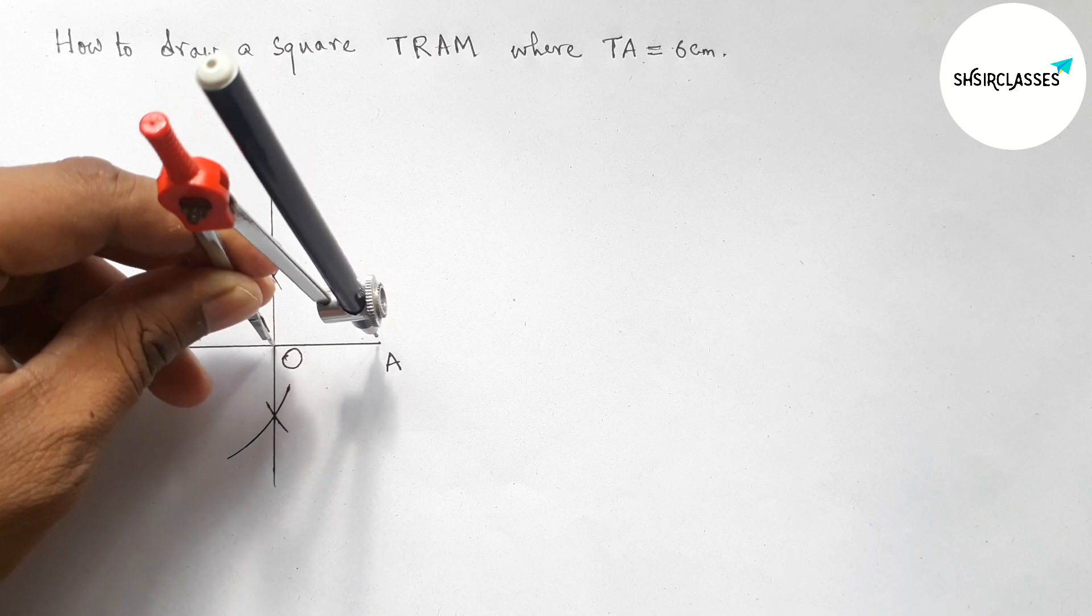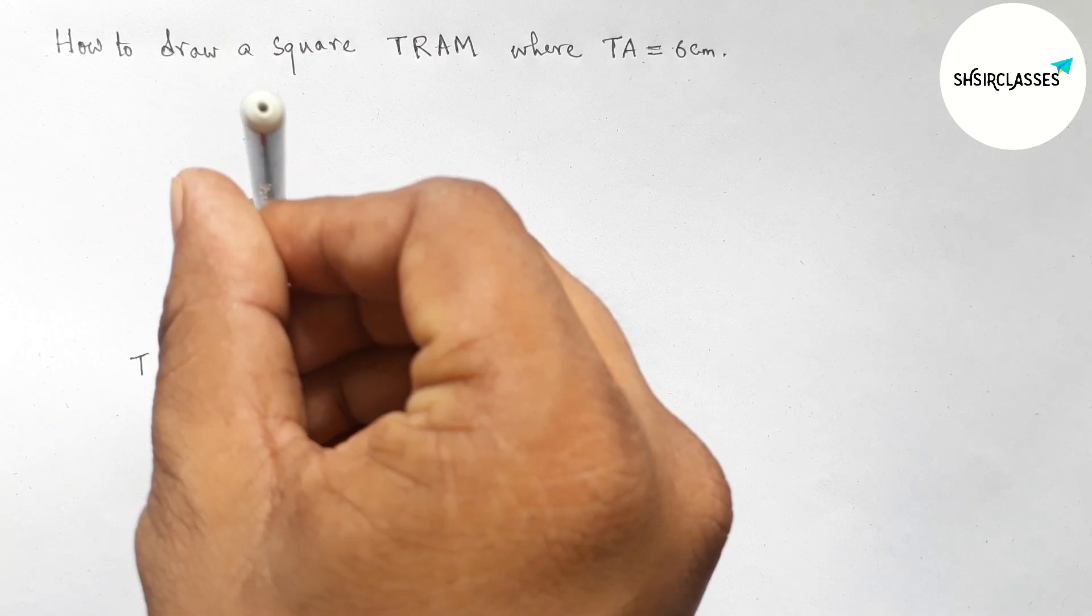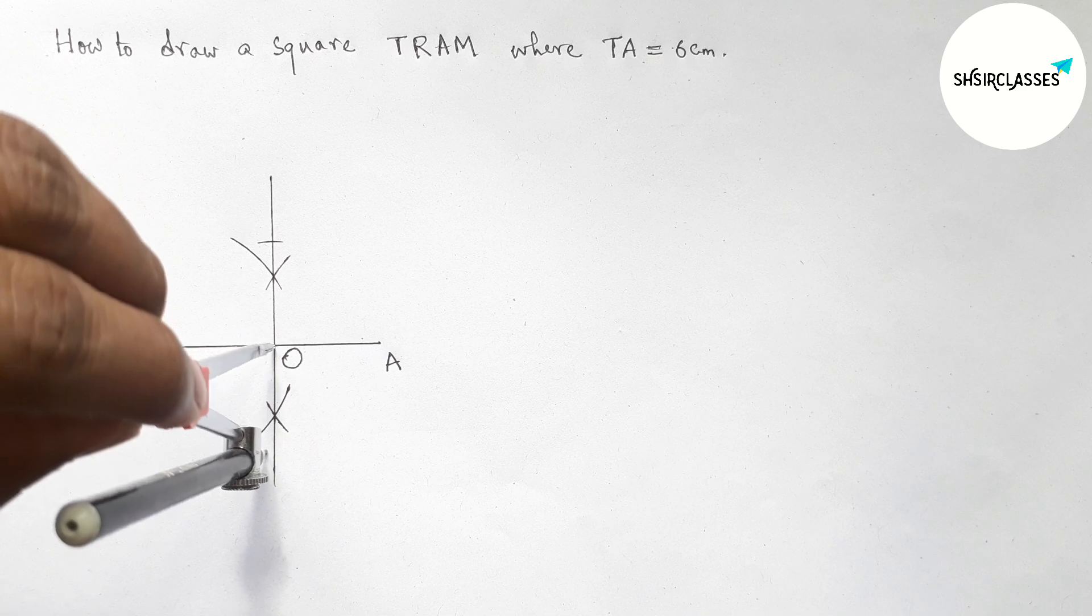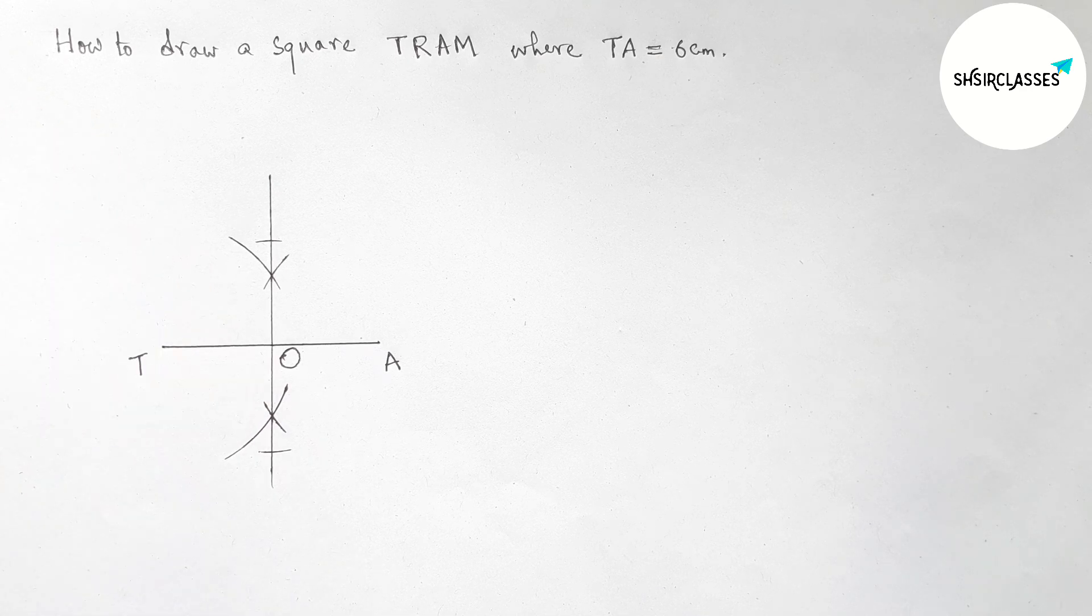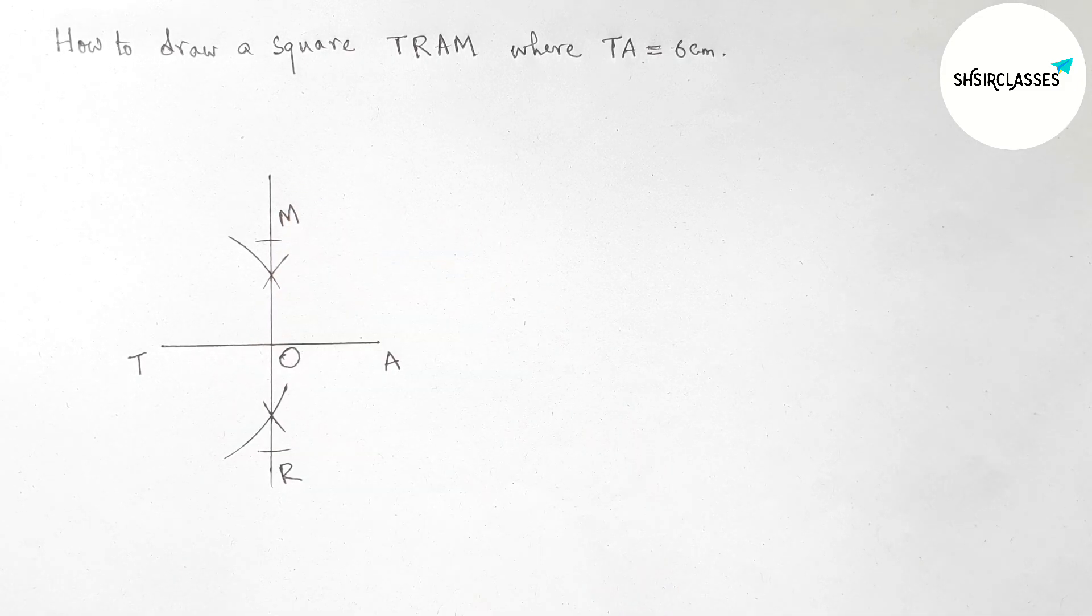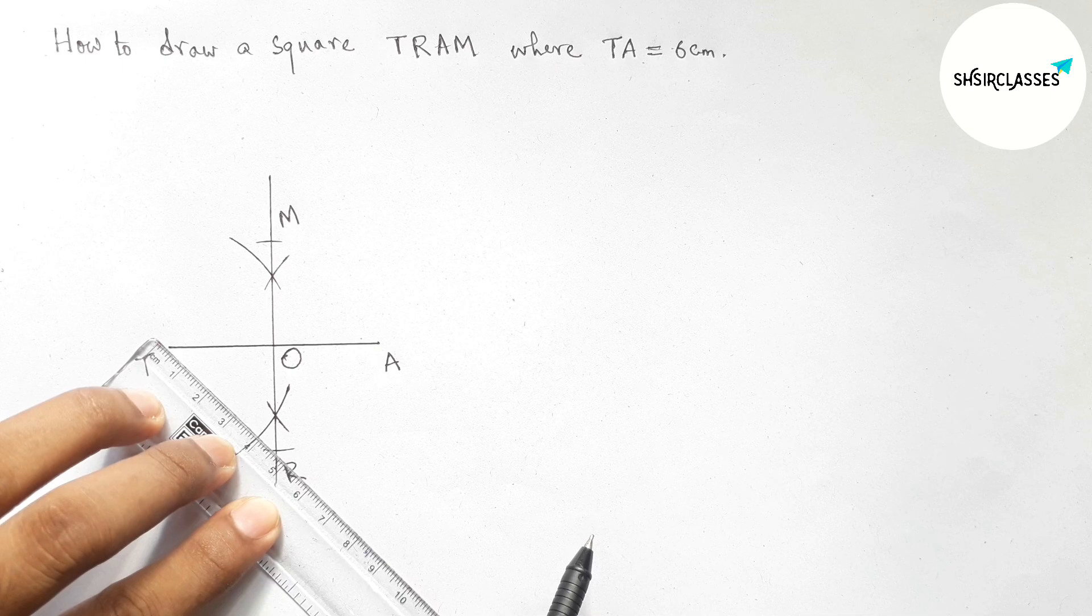Now cut the perpendicular line here and cut the perpendicular line here. So now here T, then taking here R, then here A, then last will be M. So this is perfect. Now first joining TR.